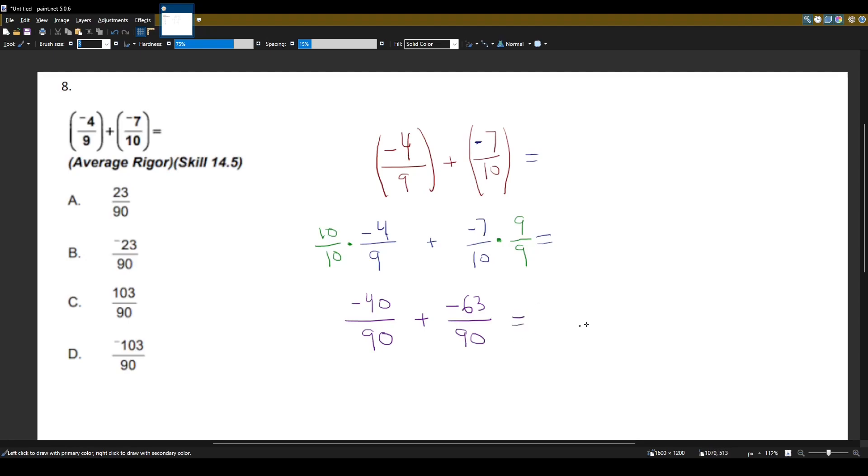And now that we have the same denominator, we can keep the denominator the same and just add the numerator. So you have negative 40 plus negative 63. And if we put that in the calculator, we'll get negative 103 over 90. And that looks like it will be answer choice D.